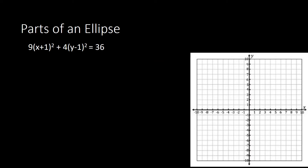Let us now go to the second example. If you notice, this equation is different from the first one — it has a non-fraction form. Recall that the standard equation of an ellipse should have fractions, and the right side should equal 1. Here it equals 36, so we need to divide everything by 36 to make it equivalent to 1.